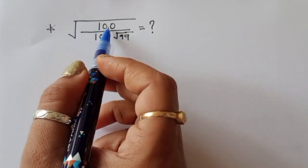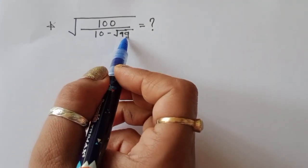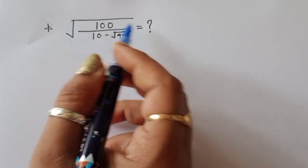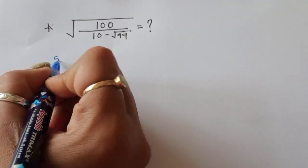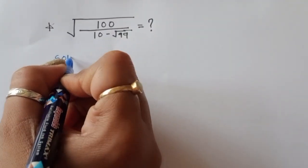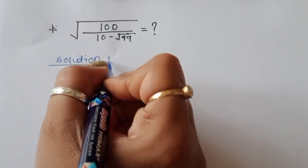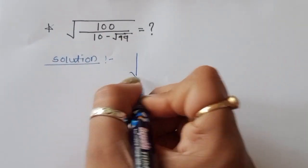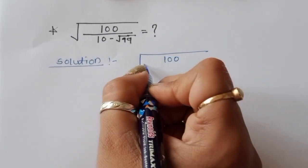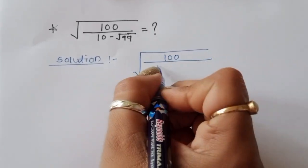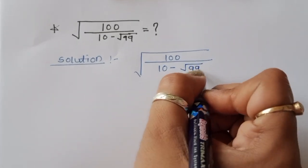The question is: given √100 divided by (10 minus √99), we have to find out the value of this term. Let's see the solution. We write square root of 100 divided by 10 minus square root of 99.